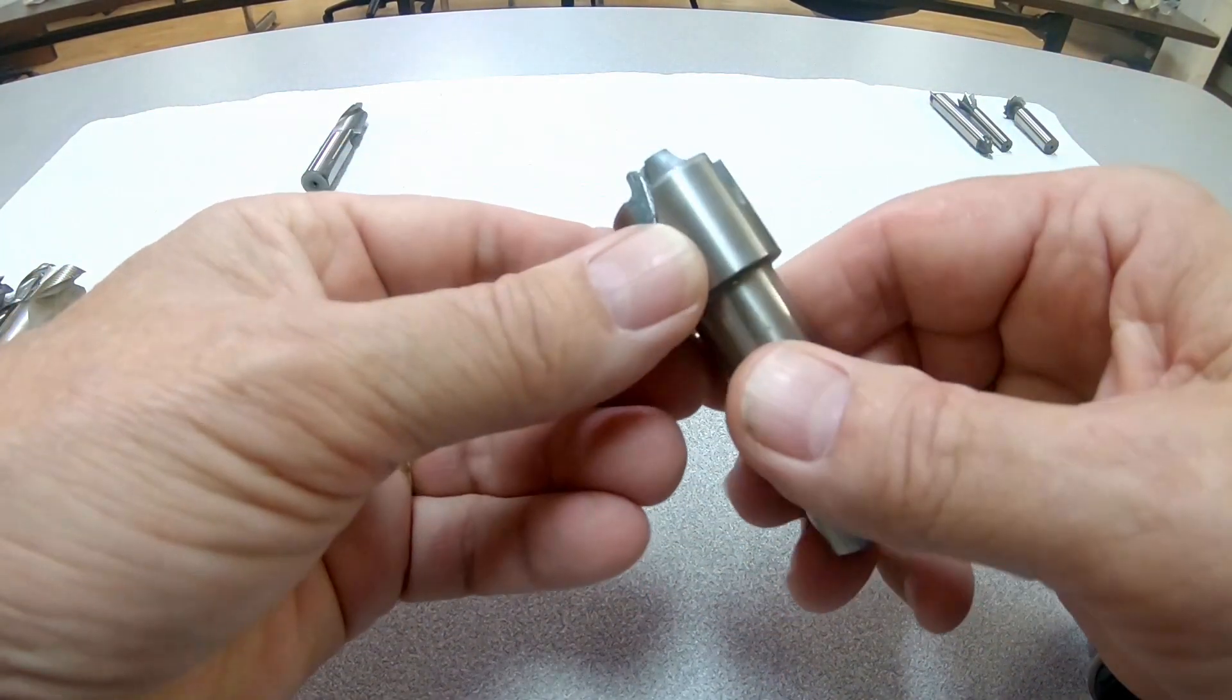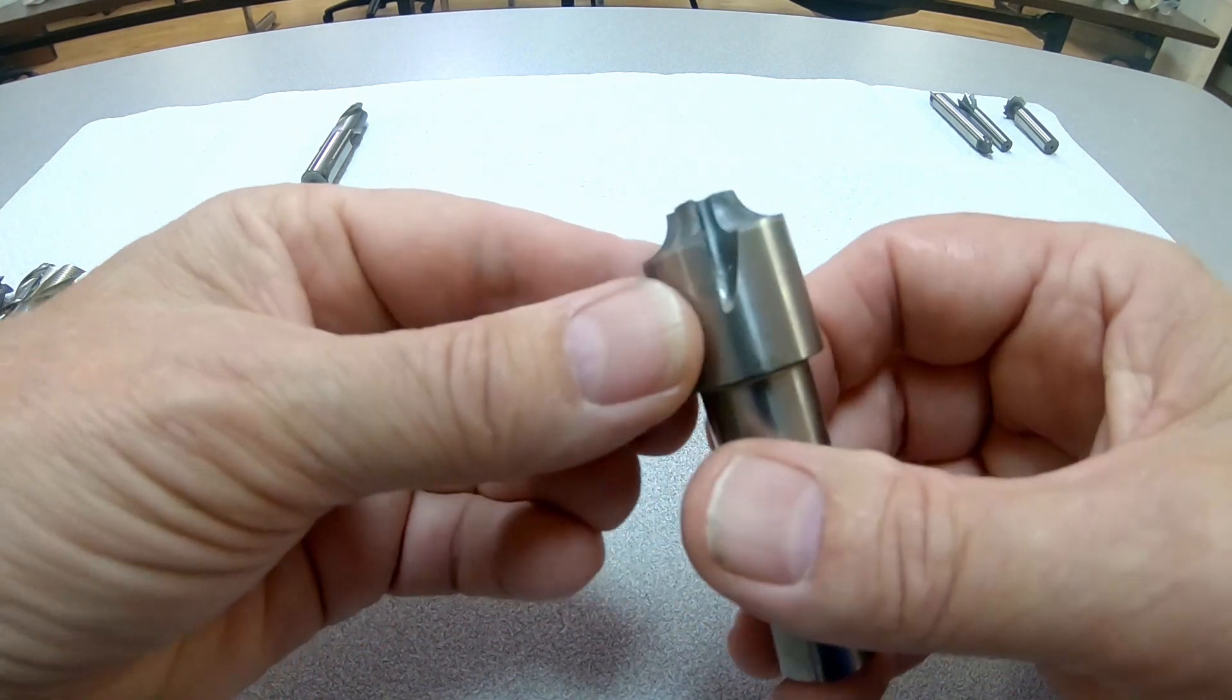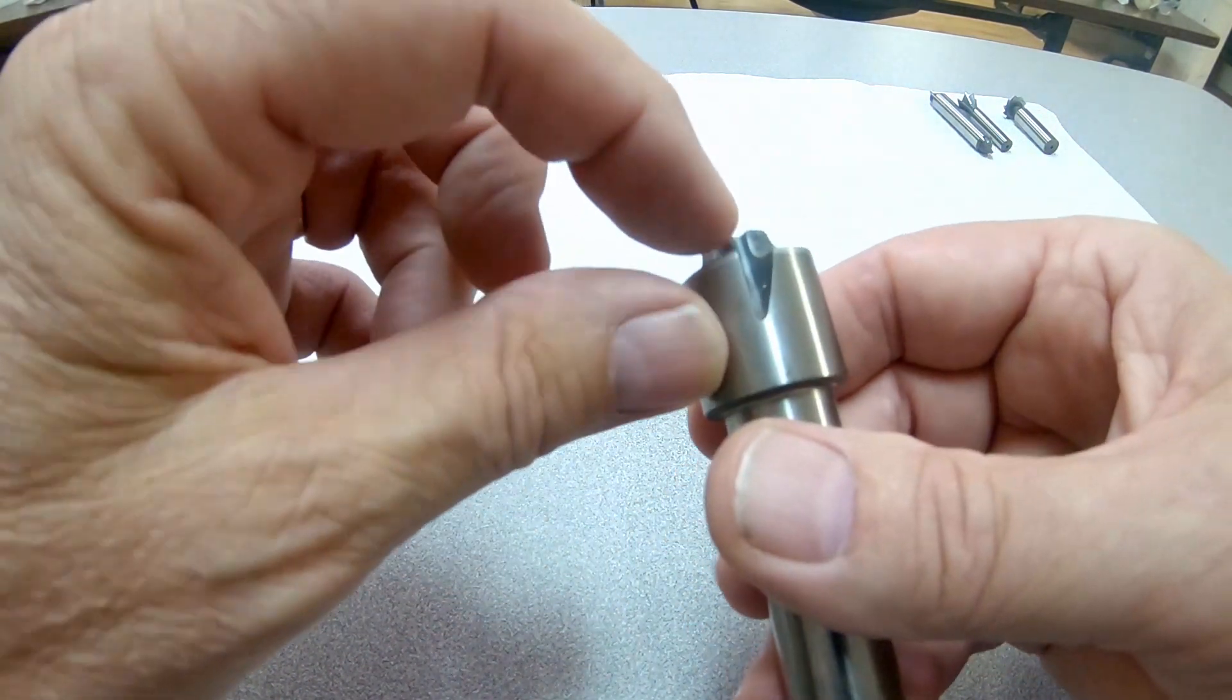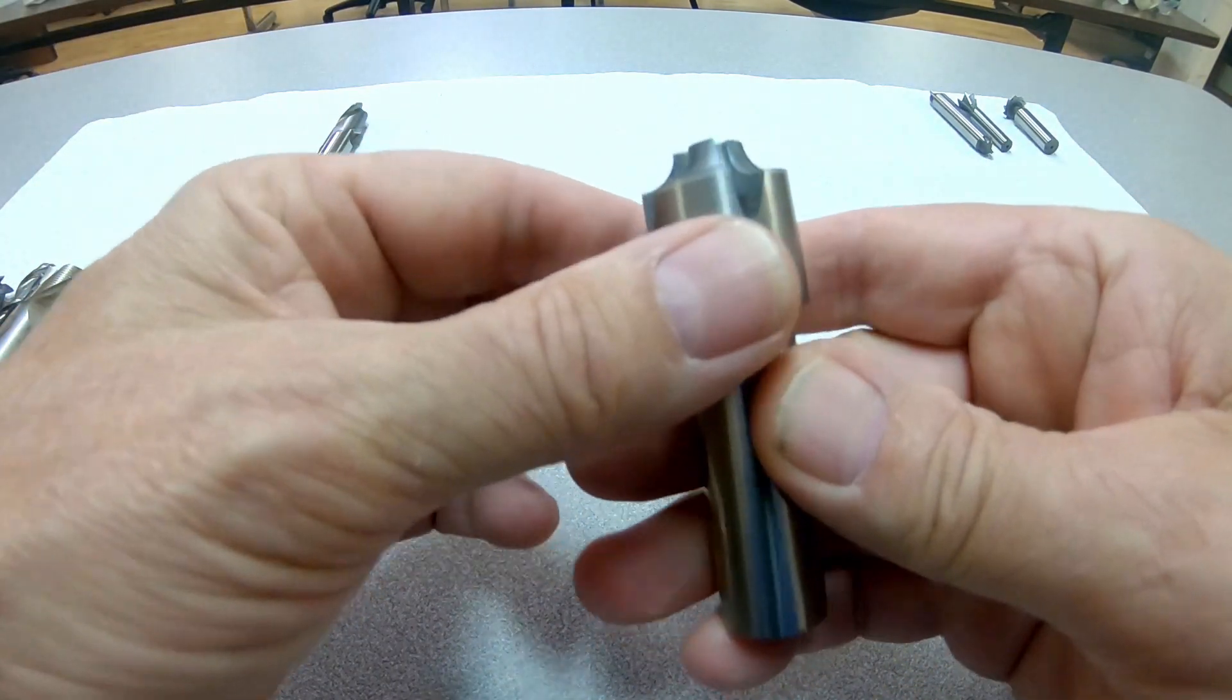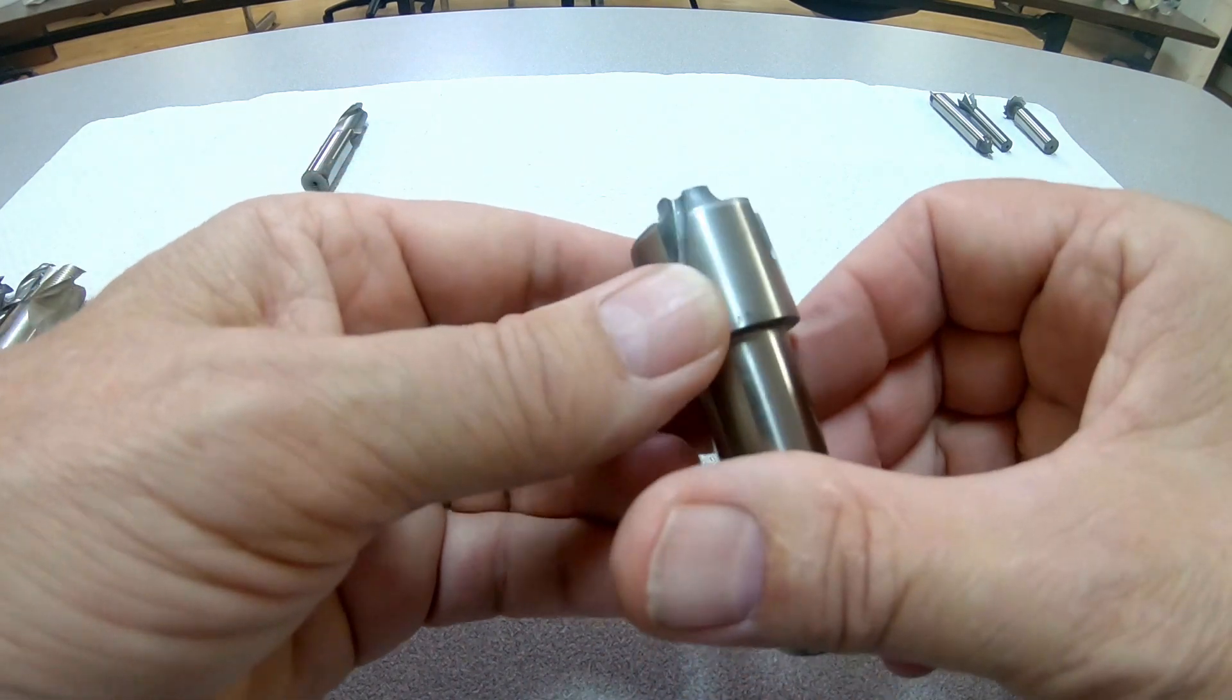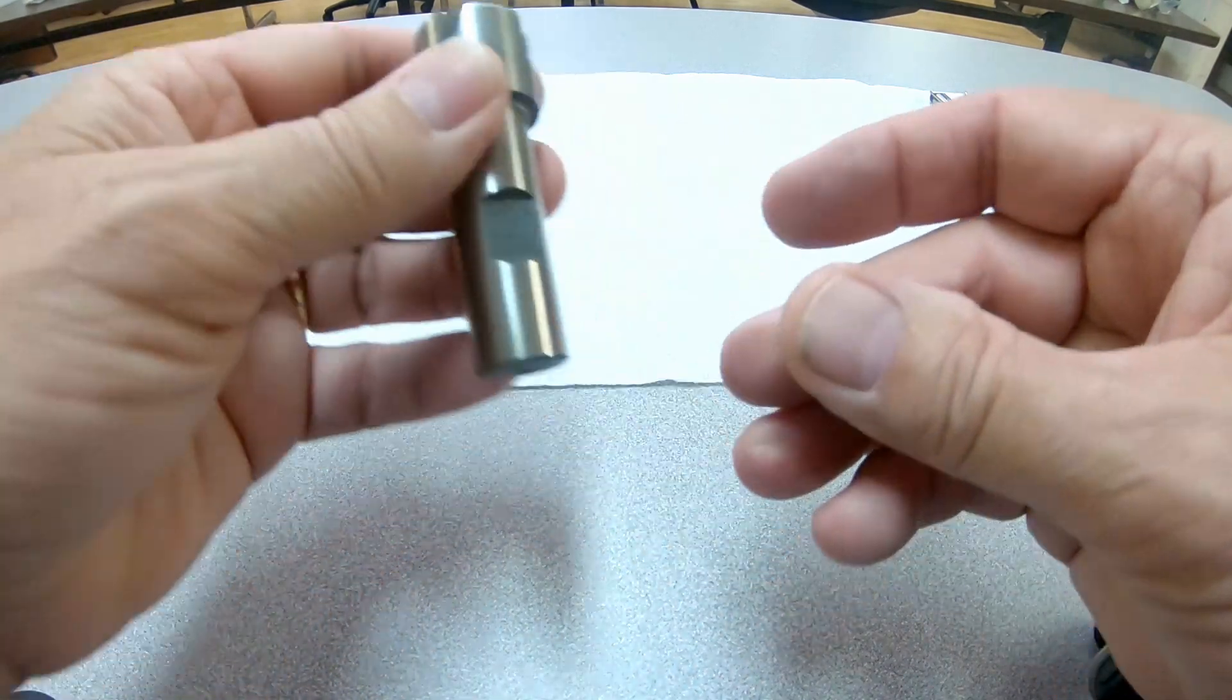Now, here's a corner rounding end mill. These aren't particularly efficient at chip removal, so you've got to take it easy with them. You can see there's very little space there for chip removal. But these will round the corner of an object and give you a nice finish.